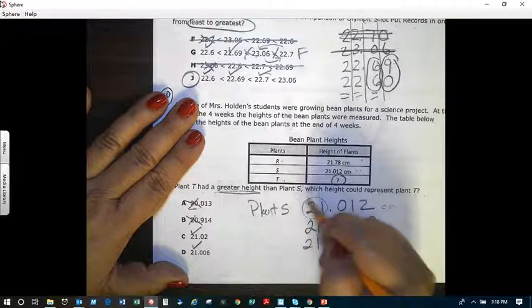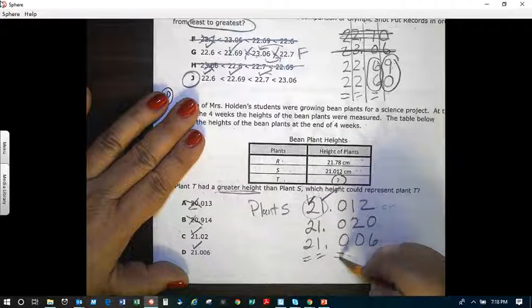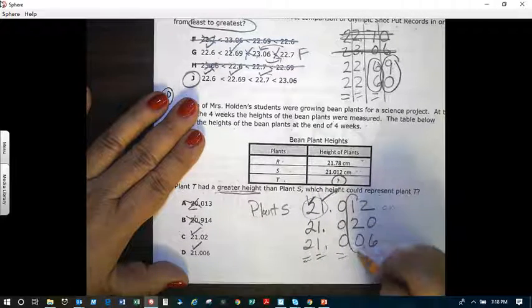So these are all correct. This is equal, equal, S is equal, and now I'm coming to this place value.